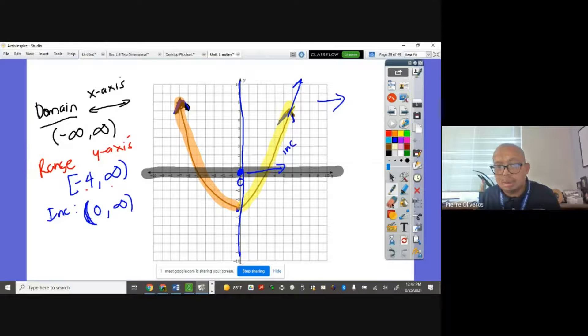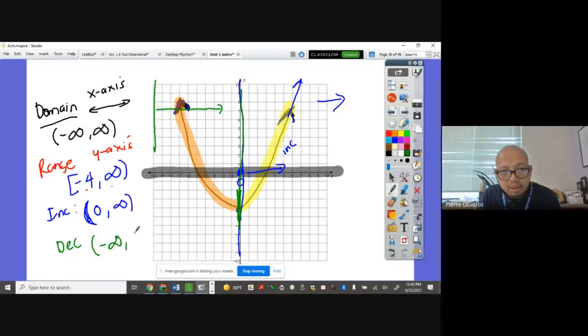We never use bracket on this kind of problem. And for the decreasing, decreasing interval, everything on the left side to the 0 because it stopped increasing on this level. So it's going to be from negative infinity to 0. Understood?